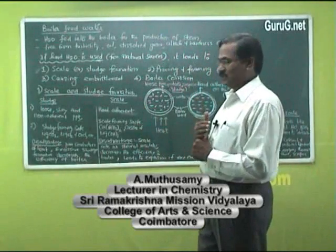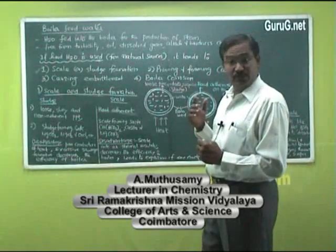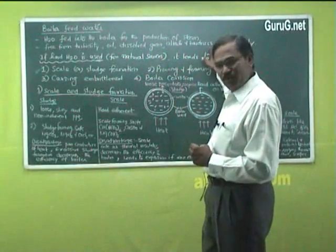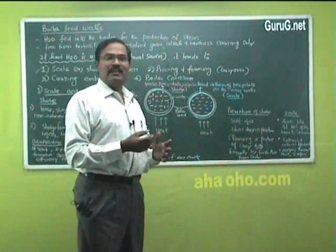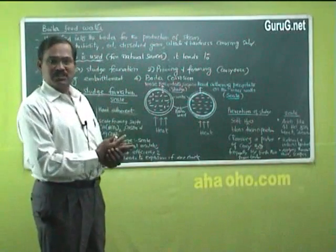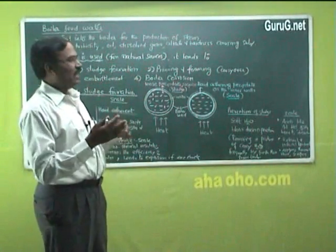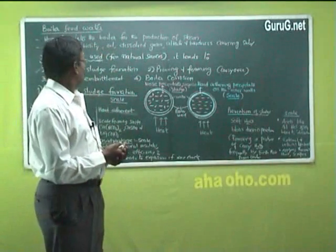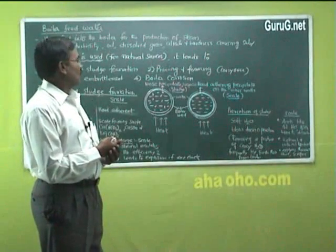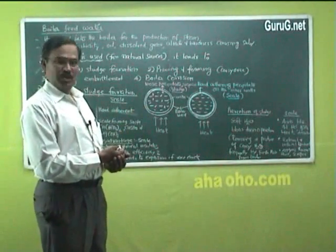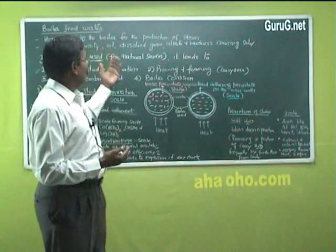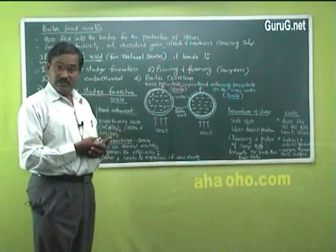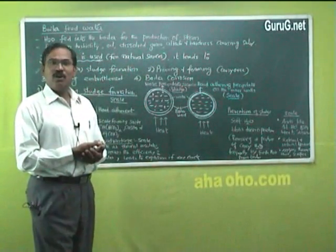That water which is fed into the boiler should be free from turbidity, free from oil, dissolved gases, alkalis, and most importantly, hardness-causing substances. Then only there won't be any problem when the water is used in the boiler. But we cannot always get water free from all these things, because natural water carries hardness-causing substances, and surface water may be contaminated with turbidity, oil, dissolved gases, or alkalis.